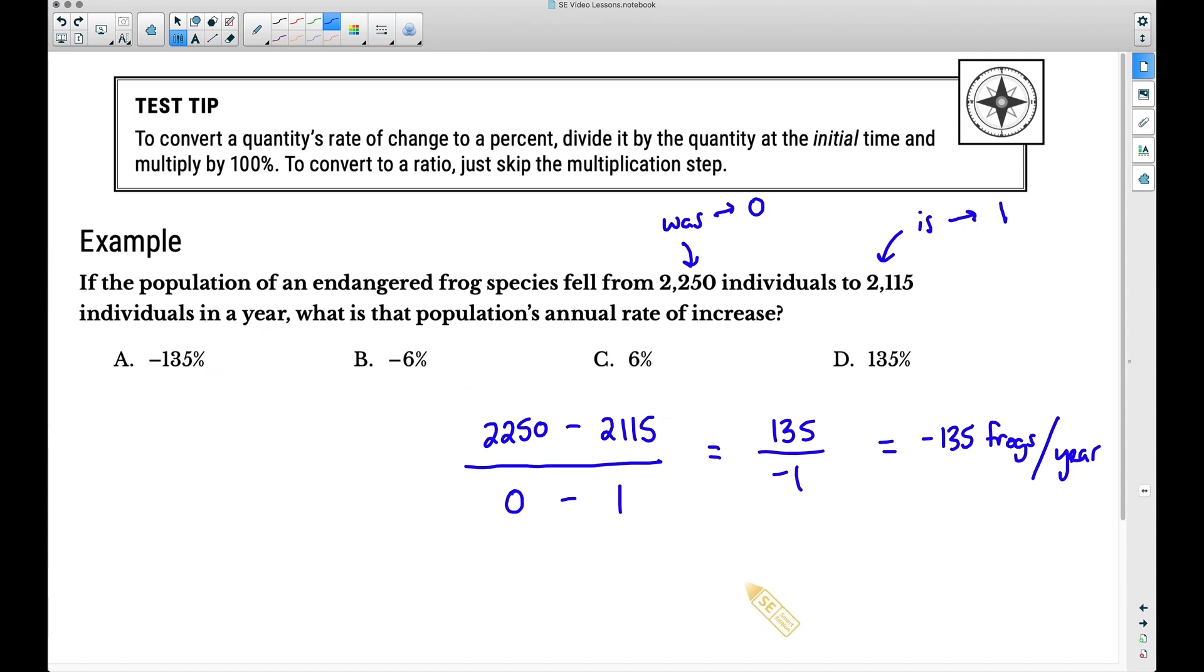How many were there before the 135 frogs died? 135 frogs died out of a total of 2250 because this is the number that it was before the population fell. And notice this test tip up here. To convert a quantity's rate of change to a percent, we want to get some percent down here, divide it by the quantity at the initial time and multiply by 100. Hey, look at this right here, divided by the quantity at the initial time. At time zero, there were 2250 frogs. That is why I'm dividing by that one. And negative 135 divided by 2250, this is negative 0.06.